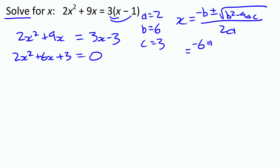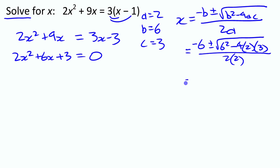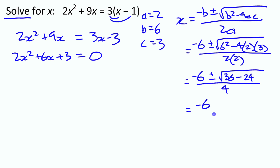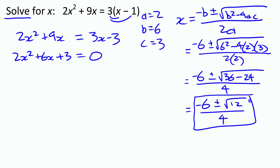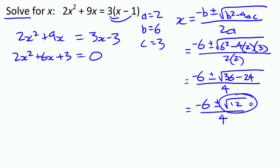Substituting in: x equals negative 6, plus or minus the square root of 6 squared minus 4 times 2 times 3, all divided by 2 times 2. That simplifies to: negative 6 plus or minus the square root of 36 minus 24, all divided by 4. That's the square root of 12 over 4. This is an exact answer, but we can simplify it further without a calculator.